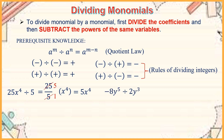Now let us have another one: negative 8y to the fifth divided by 2y to the third. We rewrite it as 8 over 2 times y to the fifth over y to the third, giving us 8 divided by 2 times y raised to 5 minus 3. 8 divided by 2 is equal to 4, so we have 4y to the second. But wait — we also account for the negative sign, giving us negative 4y squared.